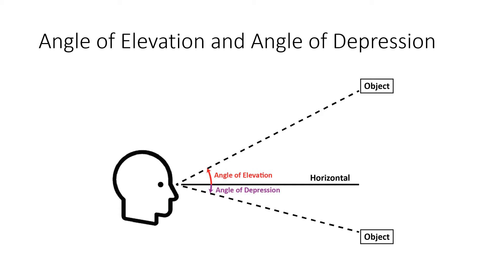One thing that comes up a lot in trigonometry application problems is the idea of angle of elevation and angle of depression. If you're imagining looking at an object, the angle formed by the horizontal and your line of sight to the object is either the angle of elevation if the object is above the horizontal, or the angle of depression if the object is below the horizontal. It's just the angle formed between the horizontal and your line of sight.